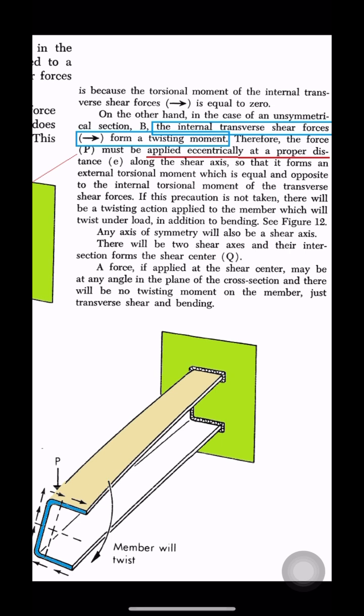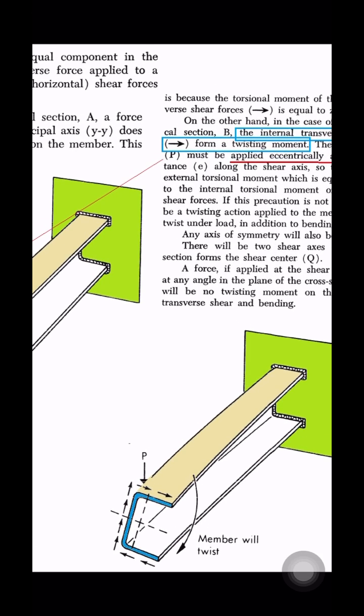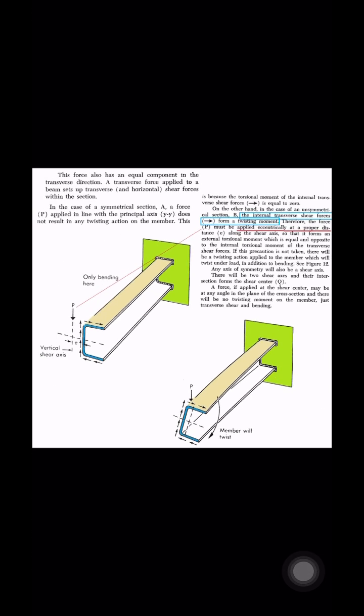If this eccentricity is not taken, there will be a twisting action applied to the member which will twist under the load in addition to bending. Any axis of symmetry will also be the shear axis. There will be two shear axes and their intersection forms the shear center.